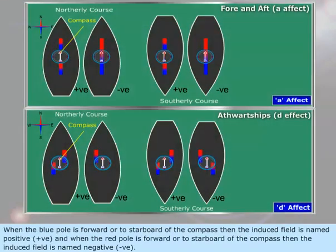When the blue pole is forward or to starboard of the compass, then the induced field is named positive. When the red pole is forward or to starboard of the compass, then the induced field is named negative.